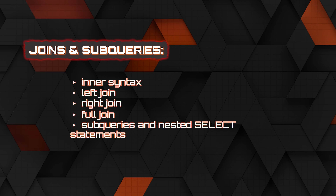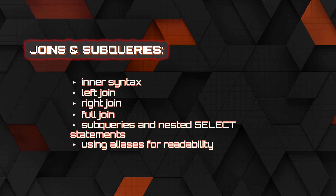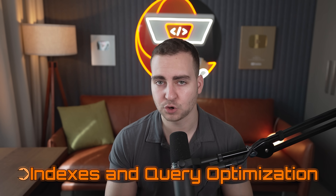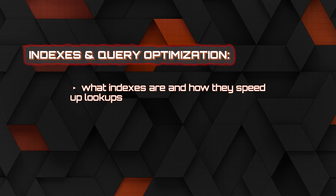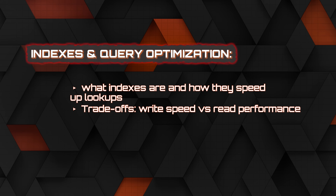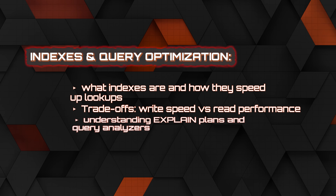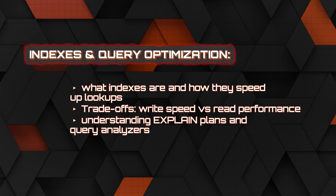You also want to look into subqueries — for example, using nested SELECT statements — and using aliases for readability. After that, look at indexes and query optimization. It's one thing to query the database; it's another to do it efficiently. Indexes are key to how quickly you can look up information. Start looking at trade-offs like write speed versus read performance, and understand things like the EXPLAIN query and how to analyze queries for performance.